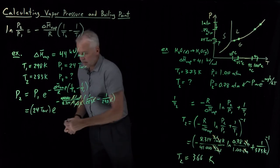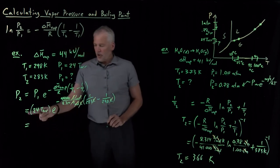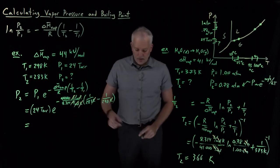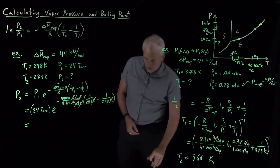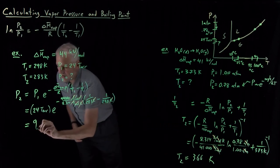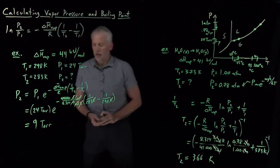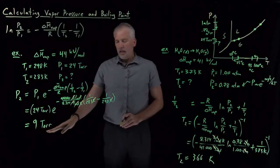And now this arithmetic works out to be 24 Tor times e to the some negative number. So it's going to reduce 24 Tor down to, with the number of sig figs we deserve, 9 Tor.